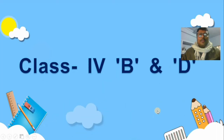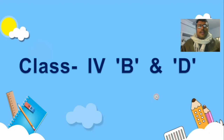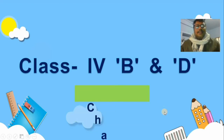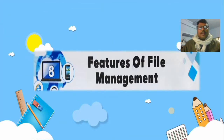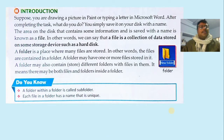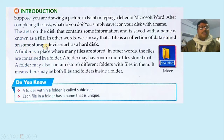Today we are going to discuss Class 4, Chapter 8: the features of file management. In this introduction, we will understand how to create a file, how to manage it, and how to store it on our computer. The area of a disk that contains some information and is saved with a name is known as a file. In other words, a file is a collection of stored data on a storage device such as a hard disk.